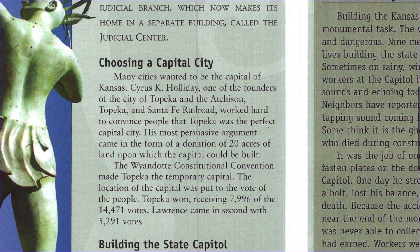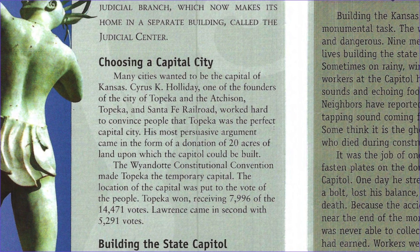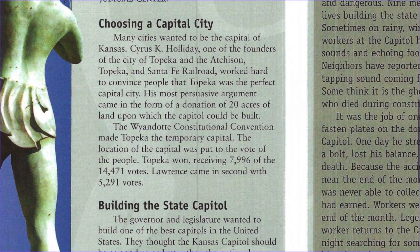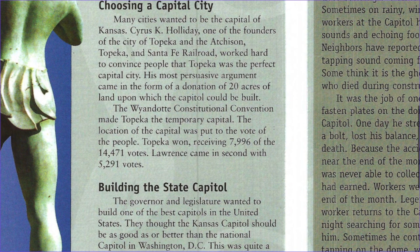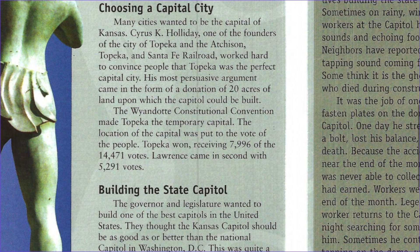Choosing the capital city. Many cities wanted to be the capital of Kansas. Cyrus K. Holiday, one of the founders of the city of Topeka and the Atchison, Topeka, and Santa Fe Railroad, worked hard to convince people that Topeka was a perfect capital city. His most persuasive argument came in the form of a donation of 20 acres of land upon which the capital could be built. The Wyandotte Constitutional Convention made Topeka the temporary capital. The location of the capital was put to the vote of the people. Topeka won, receiving 7,996 of the 14,471 votes.